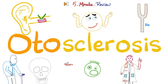Just like atherosclerosis is hardening of my arteries, otosclerosis is hardening of my ossicles — particularly the third ossicle, the stapes or the stirrup. Specifically, the foot plate of the stapes that's just hanging by the oval window. And since it's a problem of my middle ear, I can develop conductive hearing loss, and it's usually bilateral.